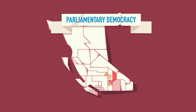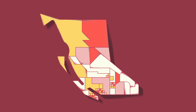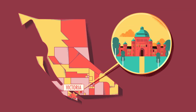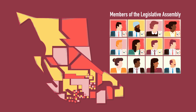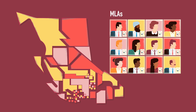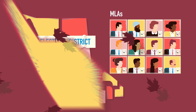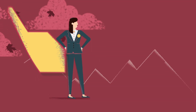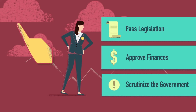British Columbia is a parliamentary democracy. This means that we elect people to represent us in Victoria at our provincial legislature. These elected representatives are called members of the Legislative Assembly, MLAs for short. They each represent a different area called an electoral district, also known as a constituency. It's their job to pass legislation, approve finances, and scrutinize the government.